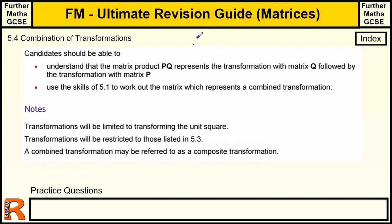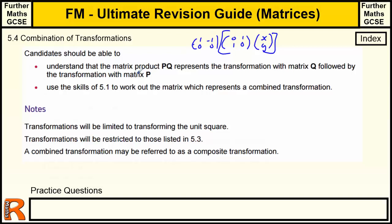If we have matrices P and Q, when applying the combined matrix to a point, the matrix next to the coordinate gives the first transformation. We work that one out first, then apply the other. We're combining skills from 5.1 and 5.3 — matrix multiplication and understanding transformations on a unit square.